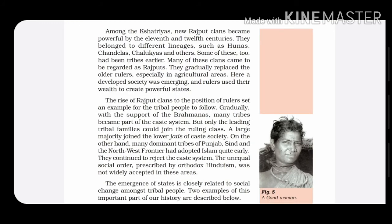Among the kshatriyas group, new Rajput clans became very powerful in the 11th and 12th century. They belonged to different lineages — lineages means ancestors — such as Rajputs, Hunas, Chandelas, Chalukyas, and many others. Some of these Rajput clans were even tribes earlier, and they came to be known as Rajputs. Slowly, they started replacing the older rulers, especially in agricultural areas, and they started creating powerful states.